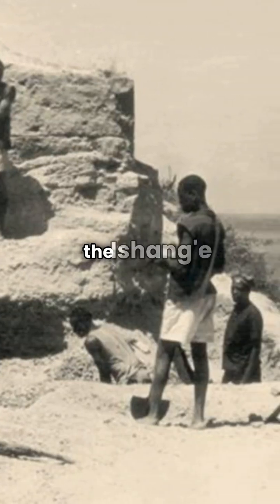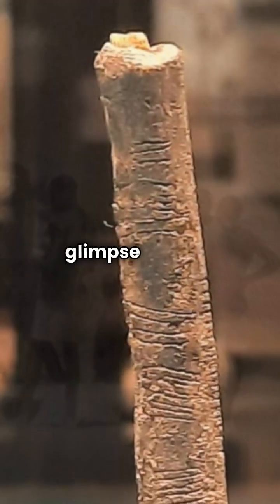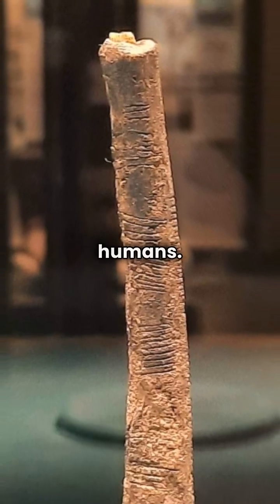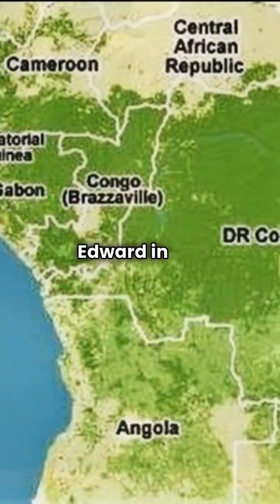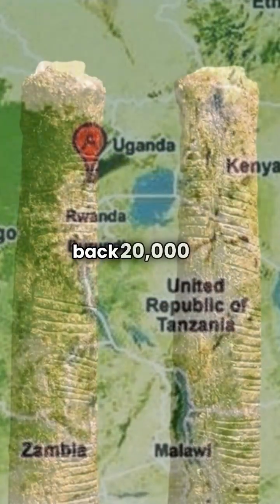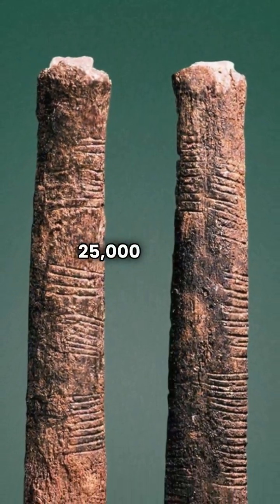Discovered in 1960, the Ishango bone is a fascinating glimpse into the minds of prehistoric humans. Found near Lake Edward in the Congo, this 10-centimeter bone dates back 20,000 to 25,000 years.